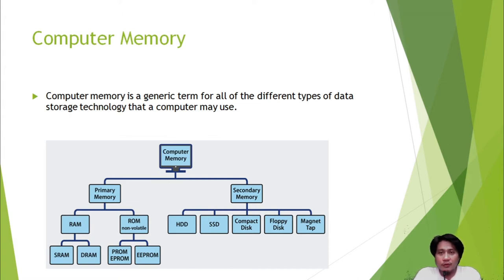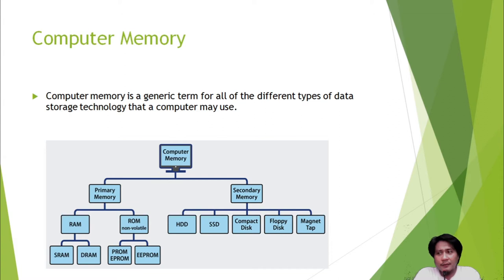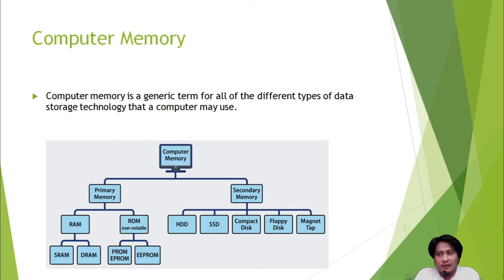When you open your computer and open File Explorer, you might see Local Disk C, D, E, and so on. Those partitions or local disks displayed in your explorer are a logical representation of your disk drive or secondary memory. In those locations, you store your information and data for a longer time — permanently, as long as your hard drive or SSD is usable and not broken.